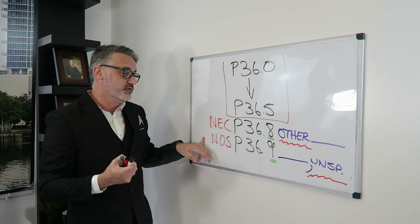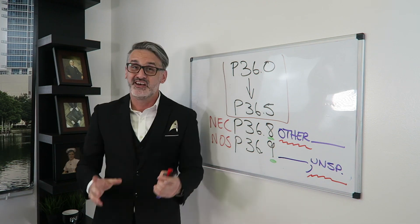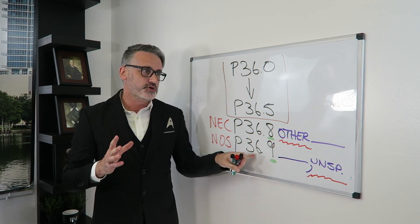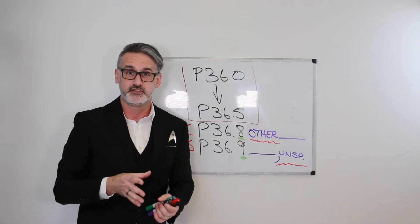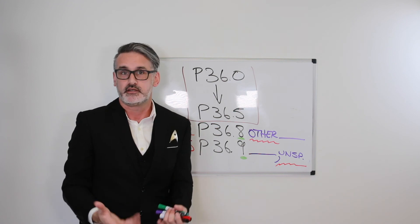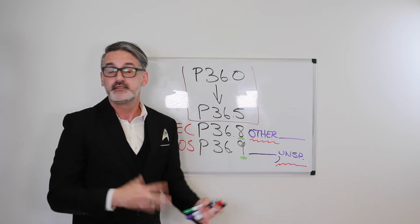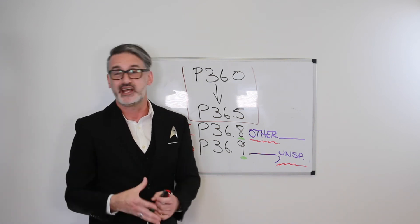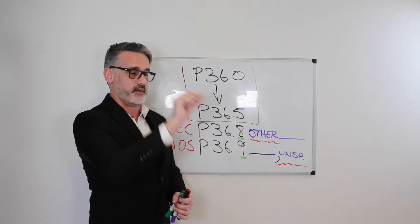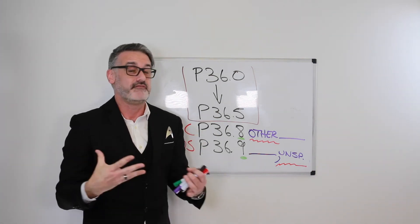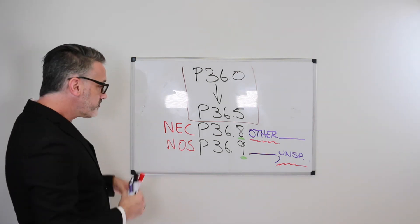NOS — not otherwise specified, or think of it as 'I don't know' — represents poor documentation. You do not know which specific code to choose. You know the patient has bacterial sepsis of the newborn, but you don't know what kind. We're not going to guess — in medical coding we never guess. Sometimes you can query the provider, sometimes you can't. If your documentation just says 'bacterial sepsis of newborn' with no further detail, that's when you choose the NOS unspecified code.